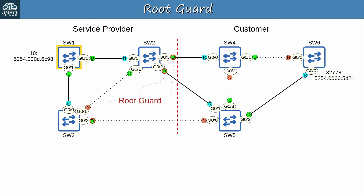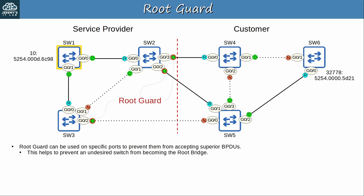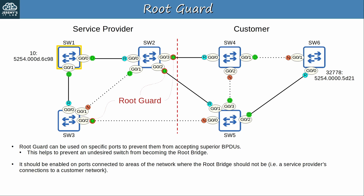To summarize RootGuard: it can be used on specific ports to prevent them from accepting superior BPDUs, helping to prevent an undesired switch from becoming the root bridge. RootGuard should be enabled on ports connected to areas where the root bridge should not be — for example, a service provider's connections to a customer network. Be careful about using RootGuard, as it can unintentionally block ports if configured on the wrong ports, such as SW2 G0/0 and SW3 G0/0 which are root ports.